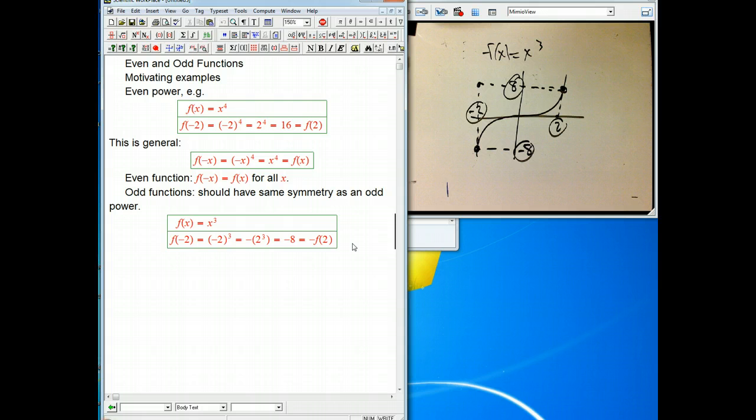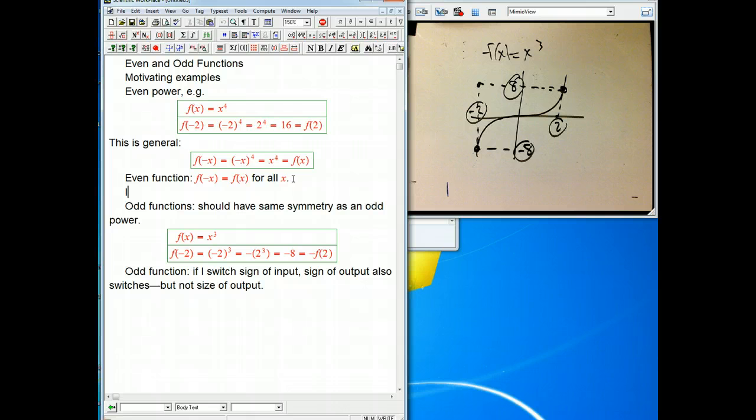So we could describe an odd function as something where if I switch the sign of the input, the sign of the output also switches. But that's the only thing that switches, not the size of the output. For even functions, if I switch the sign of the input, the output doesn't change at all. That's easier to say. But this is a really tidy way to say that in equations. What about for odd functions?